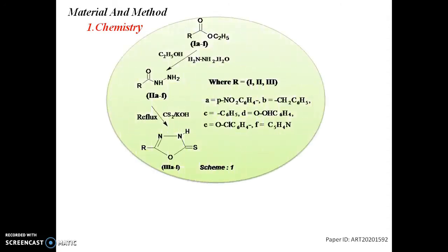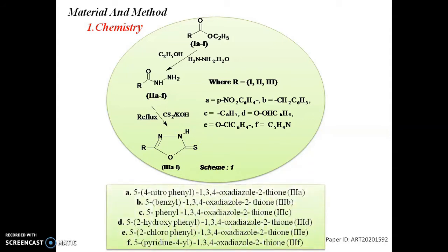Initially, acid hydrazides were obtained by esterification of corresponding acids followed by treatment with hydrazine hydrate in absolute ethanol. Then, acid hydrazides were condensed with carbon disulfide and potassium hydroxide in absolute ethanol to yield 2,5-disubstituted 1,3,4-oxadiazole derivatives. Using this scheme, I have prepared six different derivatives of 1,3,4-oxadiazole.